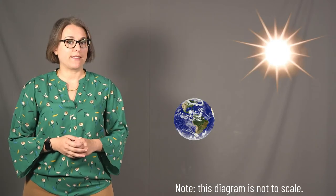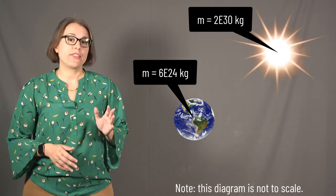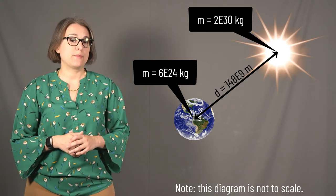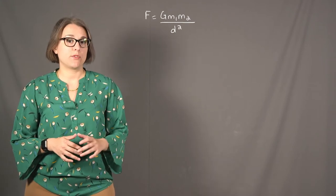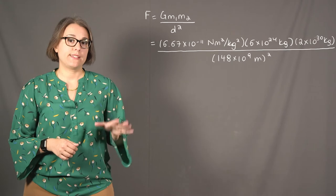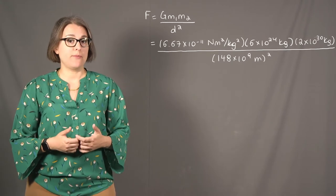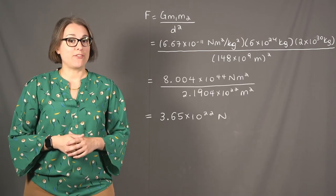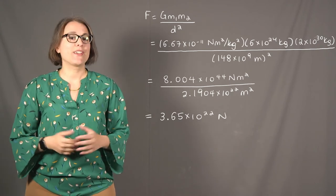Let's do some examples using Newton's law of universal gravitation. First, let's calculate the gravitational force between the Earth and the Sun. The Earth has a mass of 6 times 10 to the 24 kilograms. The Sun has a mass of 2 times 10 to the 30 kilograms. The Earth and Sun are separated by 148 times 10 to the 9 meters. Plugging into the equation: F equals 6.67 times 10 to the negative 11, times 6 times 10 to the 24, times 2 times 10 to the 30, divided by (148 times 10 to the 9) squared, which equals 3.65 times 10 to the 22 newtons. This force keeps the Earth in orbit around the Sun.